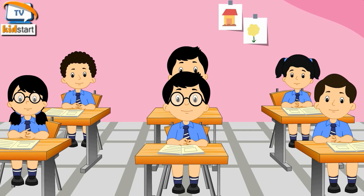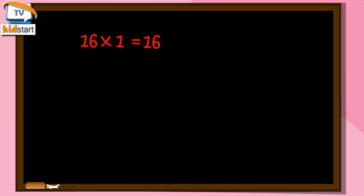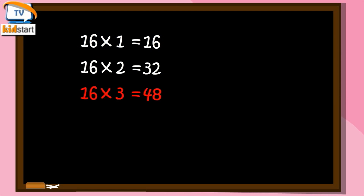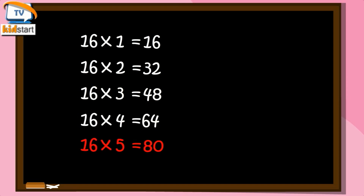Sixteen ones are sixteen. Sixteen twos are thirty-two. Sixteen threes are forty-eight. Sixteen fours are sixty-four. Sixteen fives are eighty. Sixteen sixes are ninety-six.